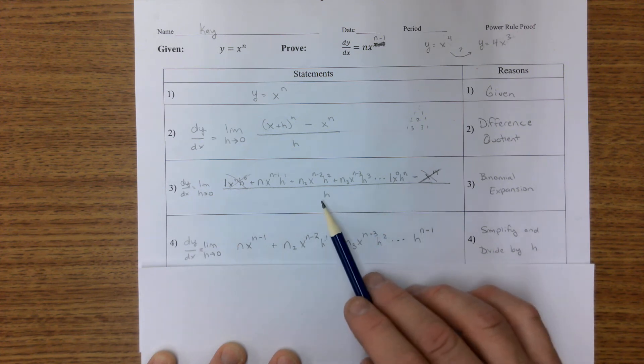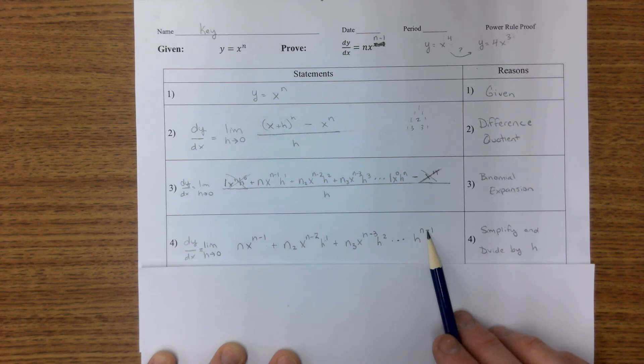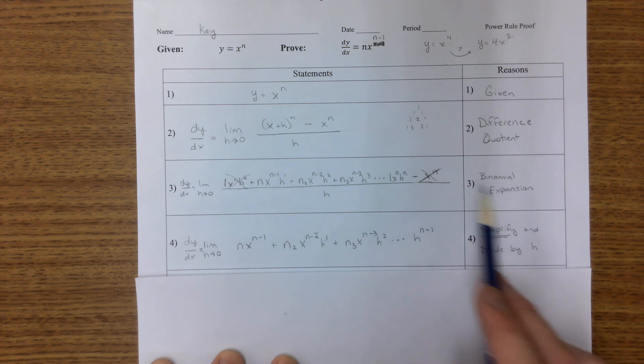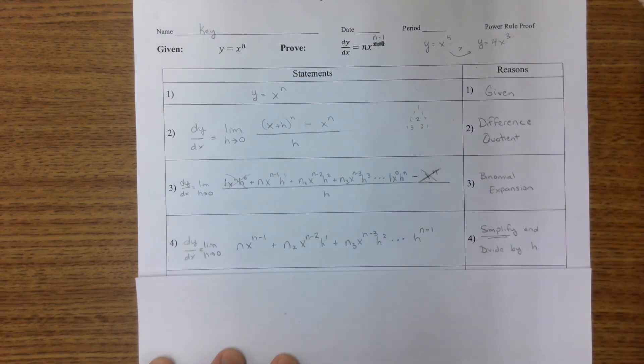So I did some simplifying where I eliminated those and I divided by h, which my h's are gone. So we have the same thing, just a simplified version.